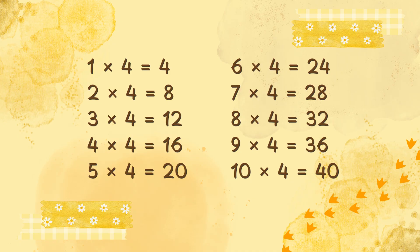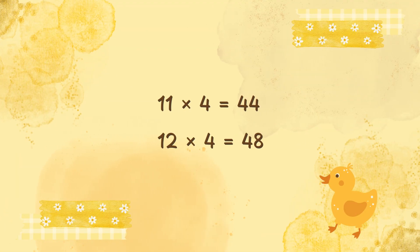7 x 4 is 28, 8 x 4 is 32, 9 x 4 is 36, 10 x 4 is 40. 11 times 4 is 44, 12 times 4 is 48.